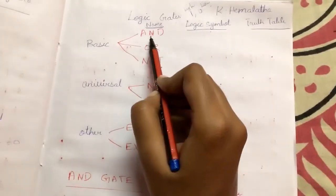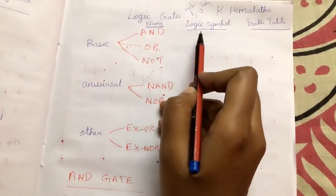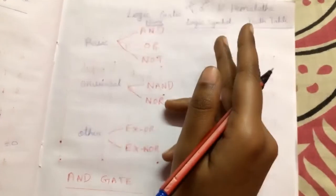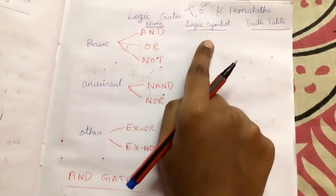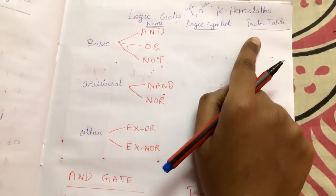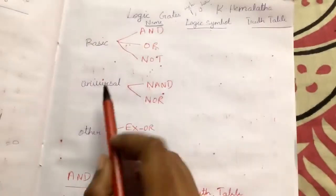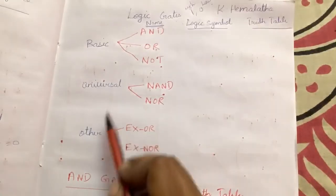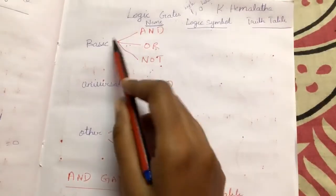The AND gate — the output is high only when all the inputs are high. Both inputs need to be high. We will first see the logical diagram and later the truth table. Before that, we need to know what are the basic gates, universal gates, and other gates.